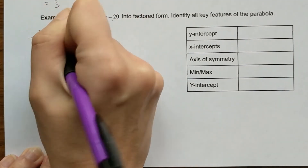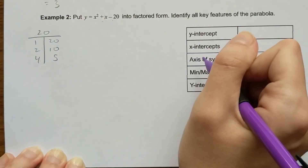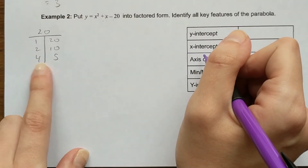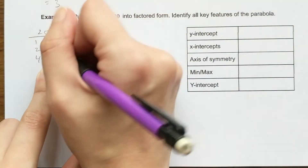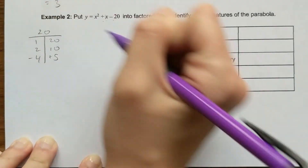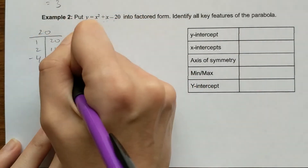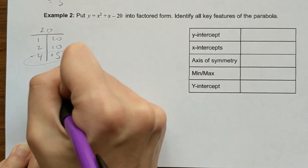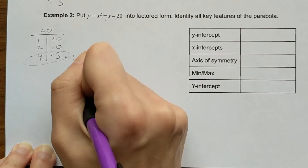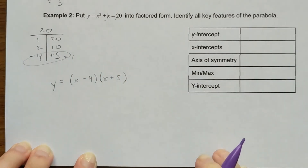To get 20, I can do 1 × 20, 2 × 10, or 4 × 5. It looks like 4 and 5 would give me the 1 that I'm looking for. The larger number 5 is positive and 4 is negative: -4 + 5 = 1. So my factored form is y = (x - 4)(x + 5).